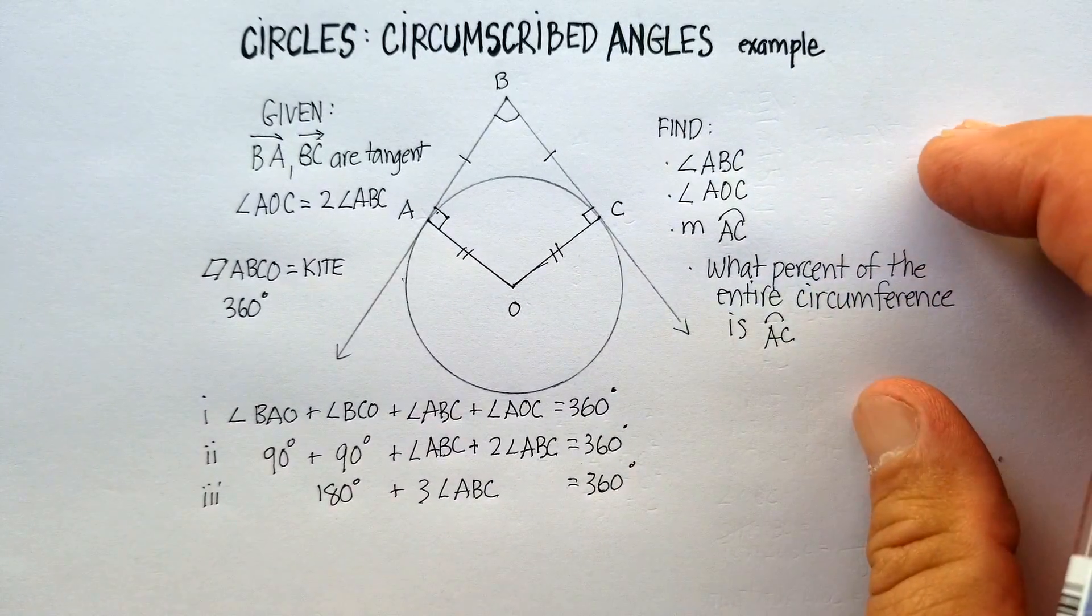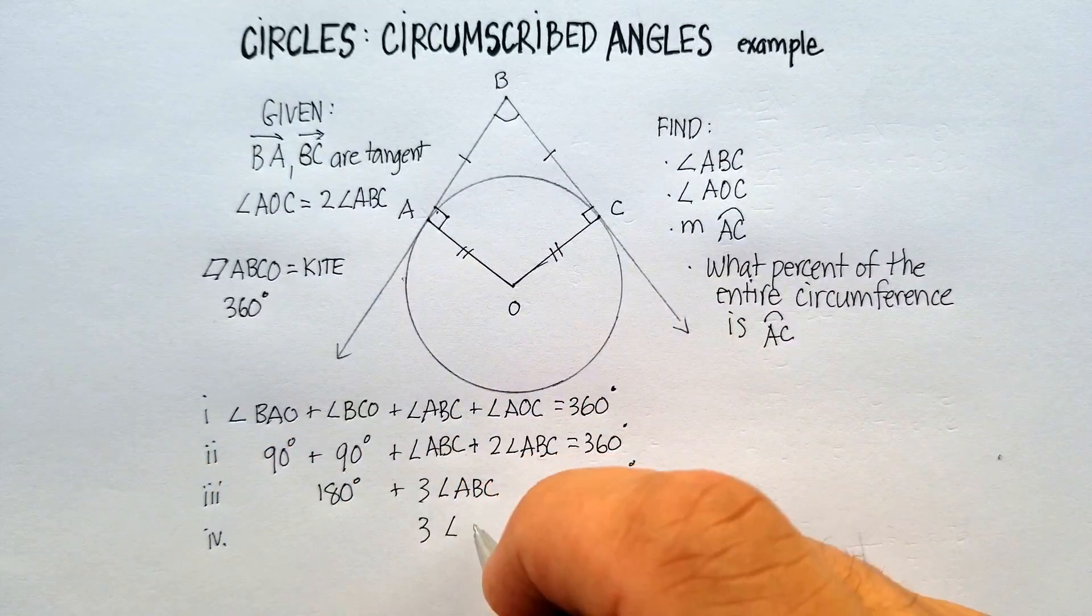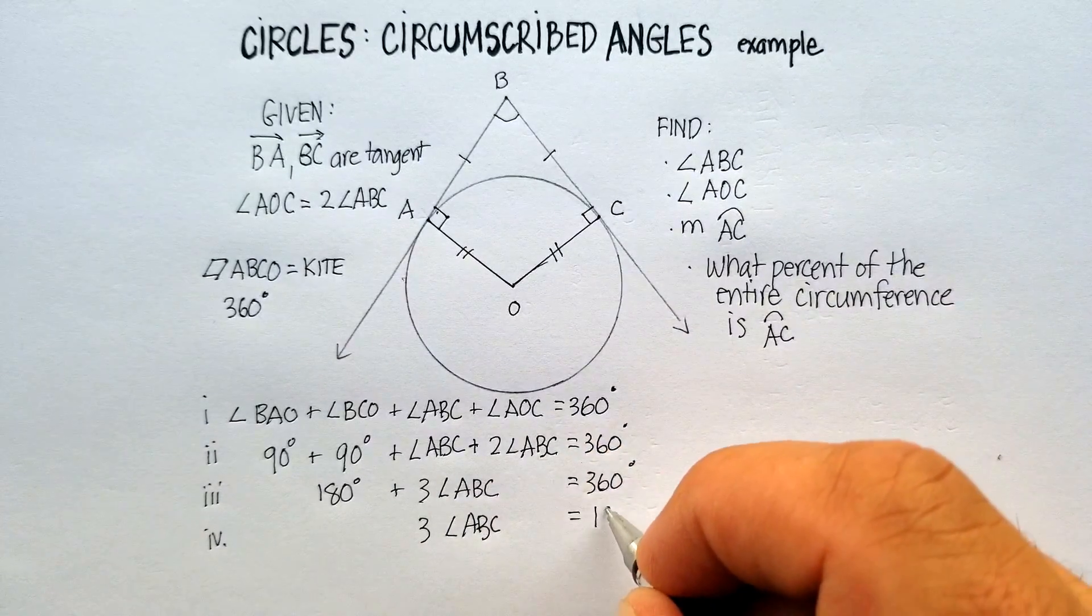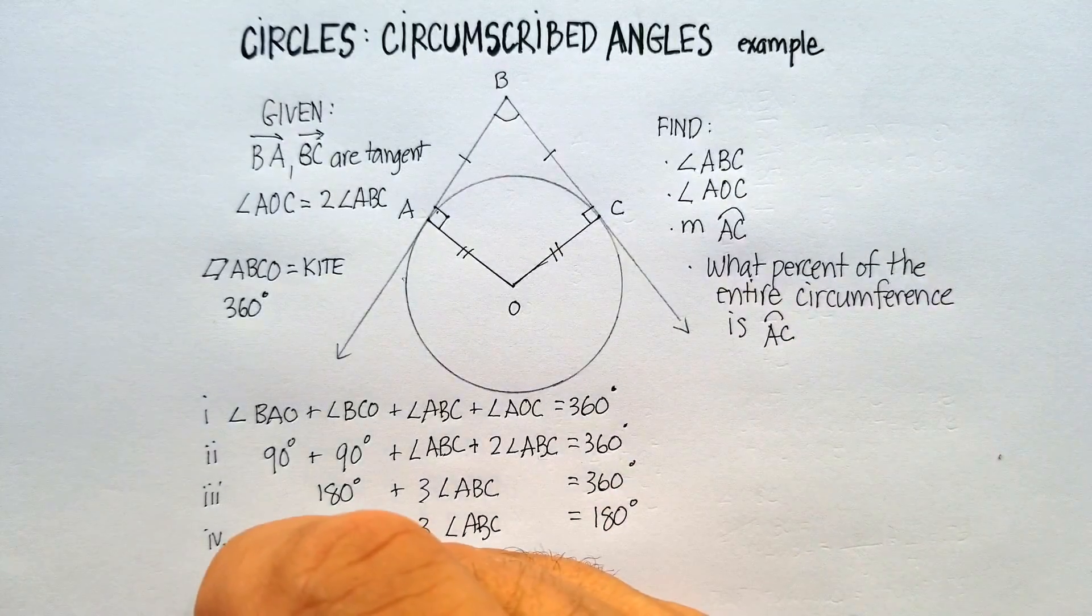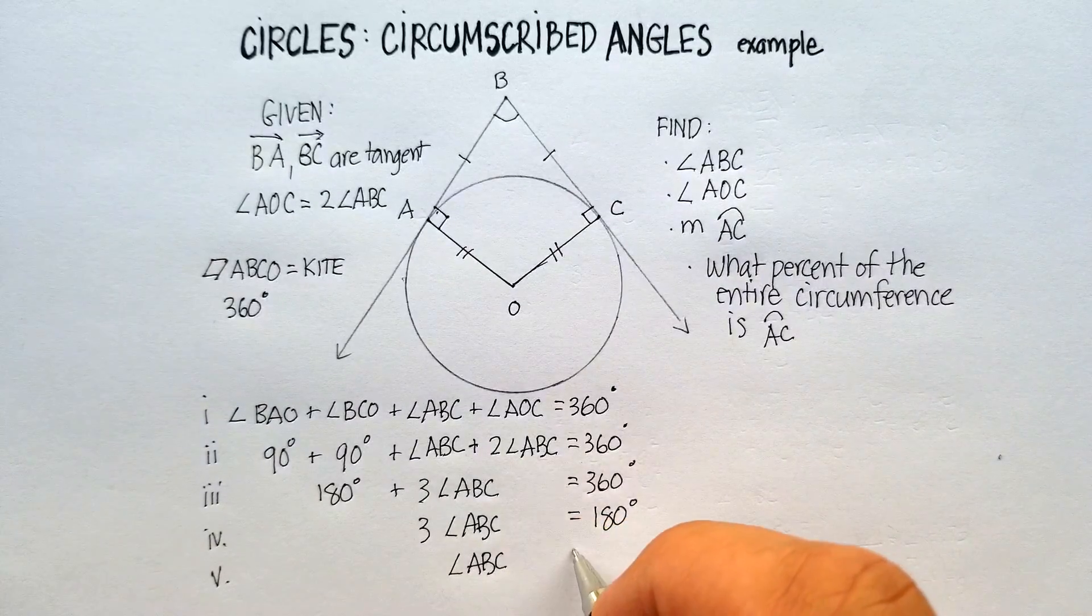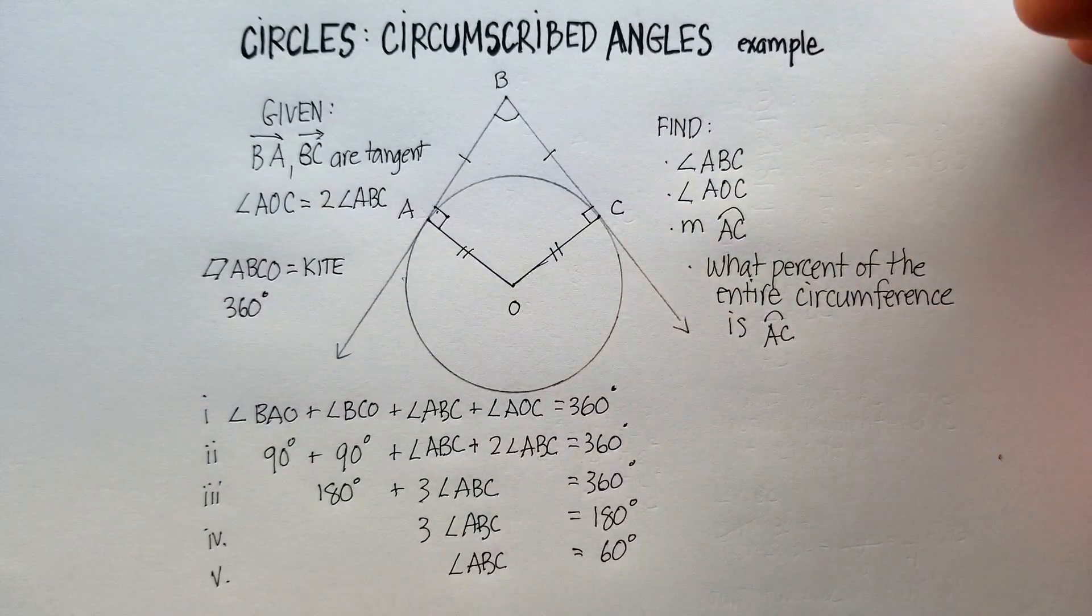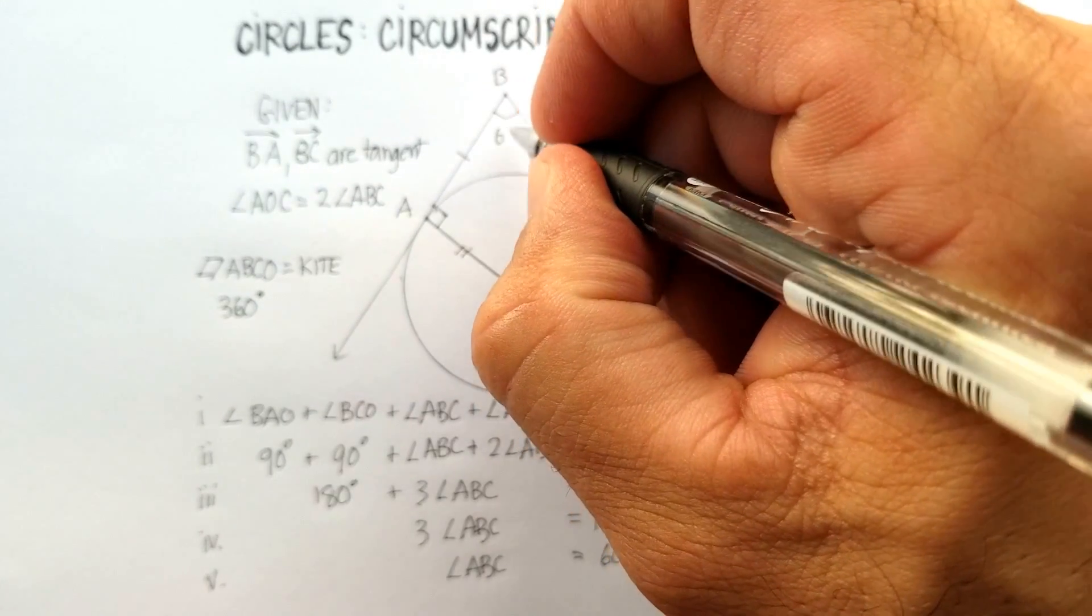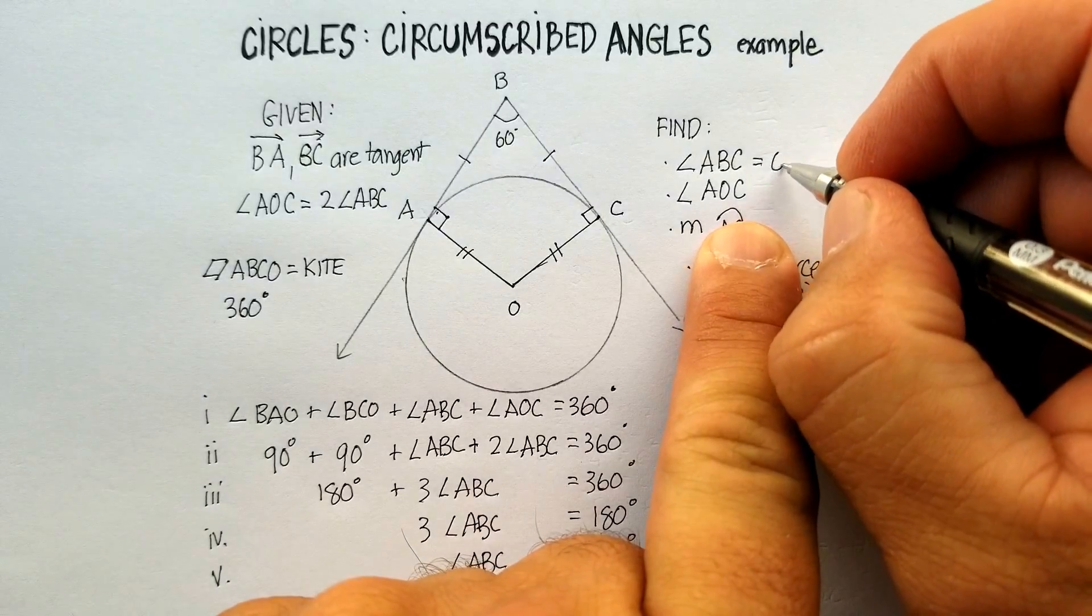Let's subtract 180 from both sides. And then we get three angle ABC is equal to 180 degrees. And now let's divide both sides by three. And you get angle ABC is equal to 60 degrees. So, let's go ahead and put that in there. Angle ABC is 60 degrees. So, we can actually put that as one of our first things that we have found.